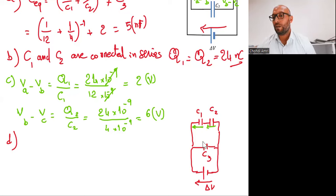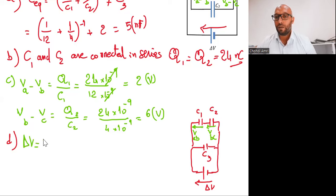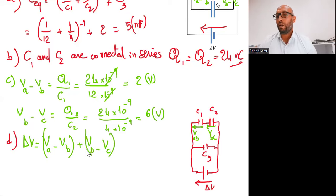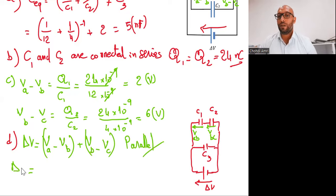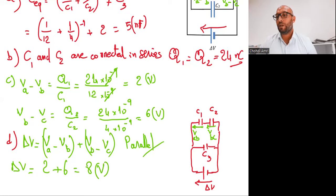This is VAB and this is VBC. So delta V equals (VA minus VB) plus (VB minus VC), because they are connected in series along the branch. The result will be 2 plus 6 equals 8 volts. So this is the potential difference across the battery.